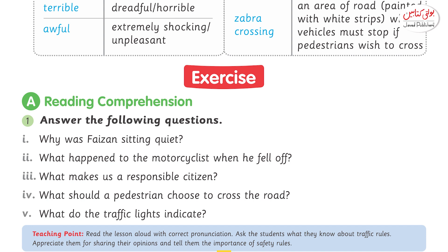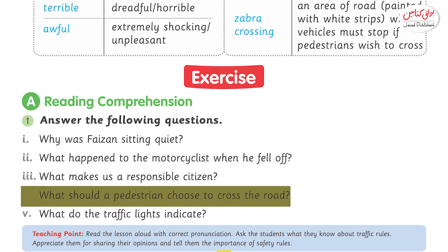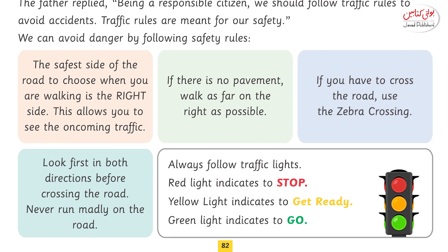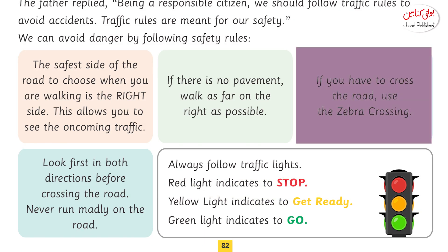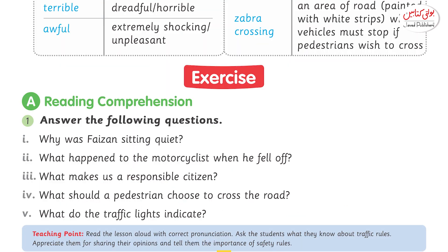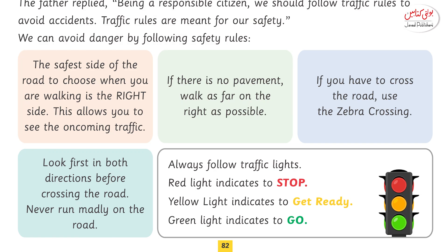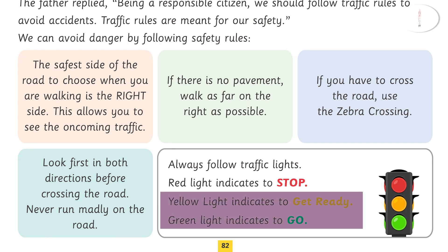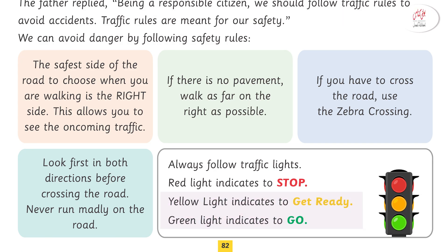Question number four: what should a pedestrian choose to cross the road? The answer is a pedestrian should choose zebra crossing to cross the road. Question number five: what do the traffic lights indicate? The answer is traffic light indicates when to stop and when to get ready and go.